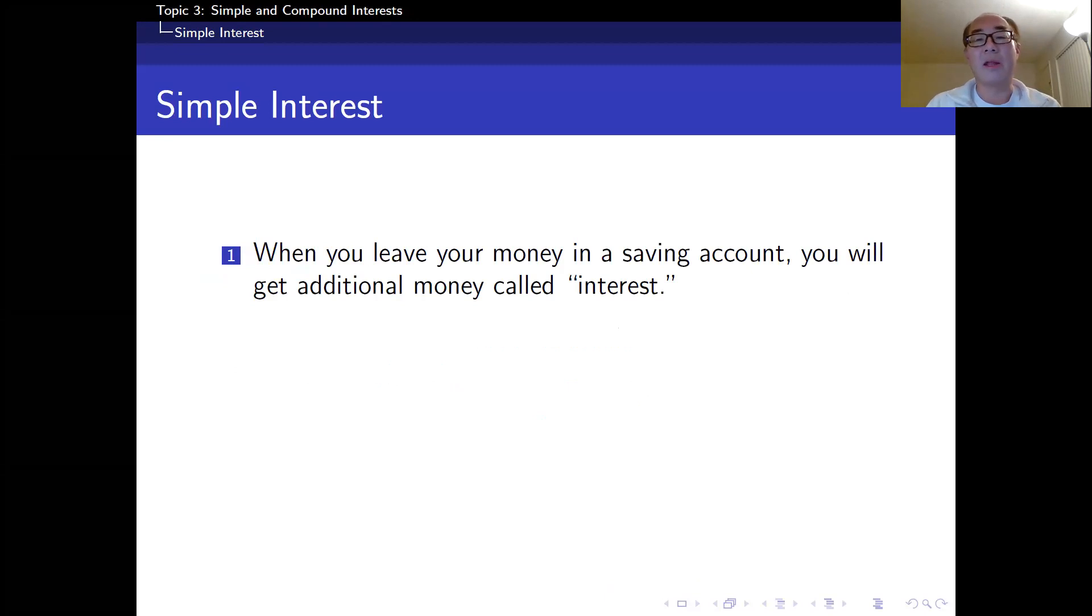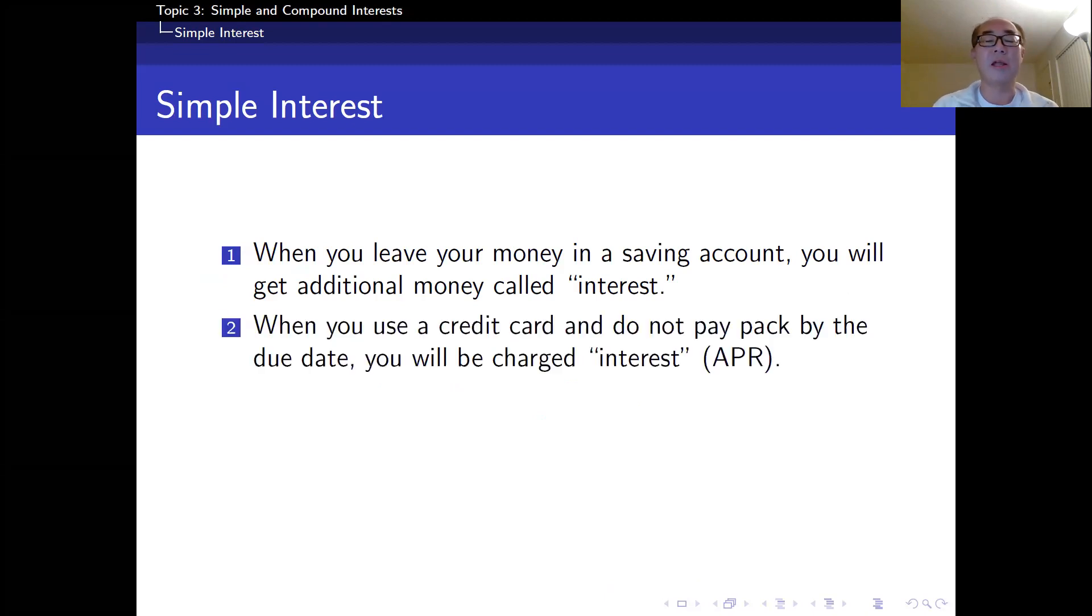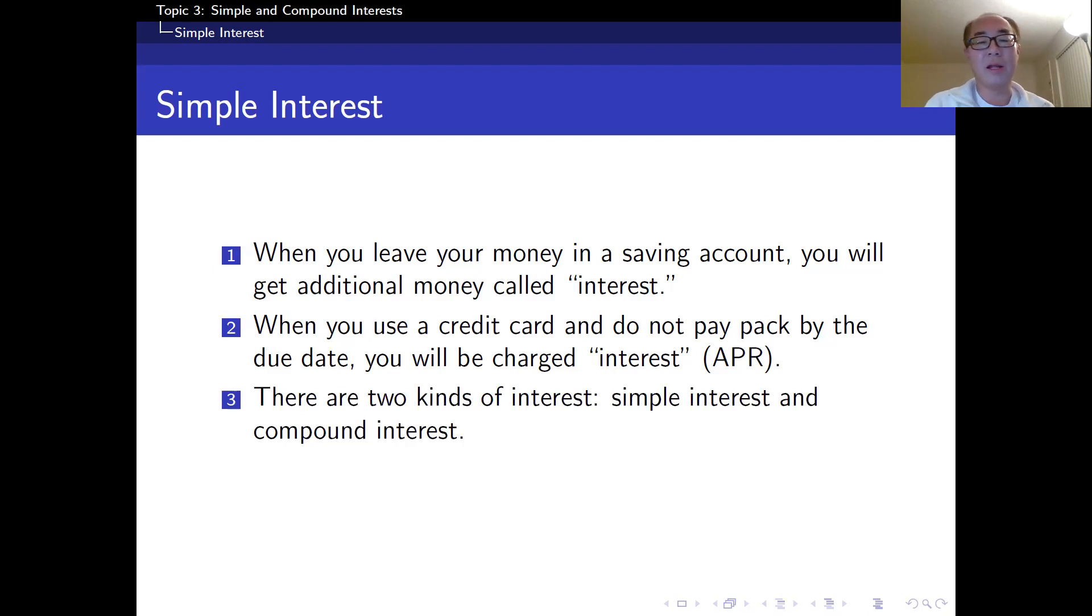When you leave your money in the saving account, you're going to get additional money called interest. Lately, the interest rate is very low, so you may not get much money, but you do get some interest after one year or two years. The other example is when you use your credit card, and if you don't pay the full amount by the due date, you're going to be charged interest. And the credit card companies call it annual percentage rate. And that's very high, like 20%. As I said, there are two kinds of interest: simple interest and compound interest. And I'm going to talk about the difference later.